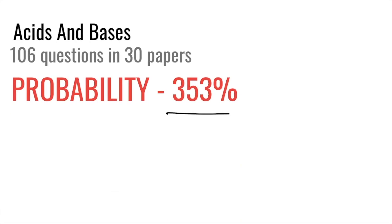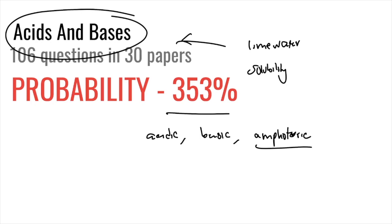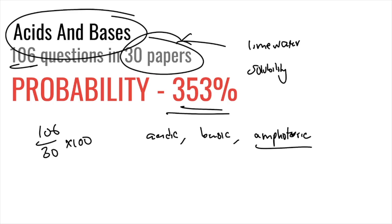Acids and bases is a big one at 353% probability — about three questions per paper with 106 questions found in 30 papers. Topics include lime water questions (calcium carbonate, calcium hydroxide), solubility of carbonates and sulfates, pH of soil in farming contexts, and whether substances are acidic, basic, or amphoteric. Aluminium is amphoteric — that's important to remember.